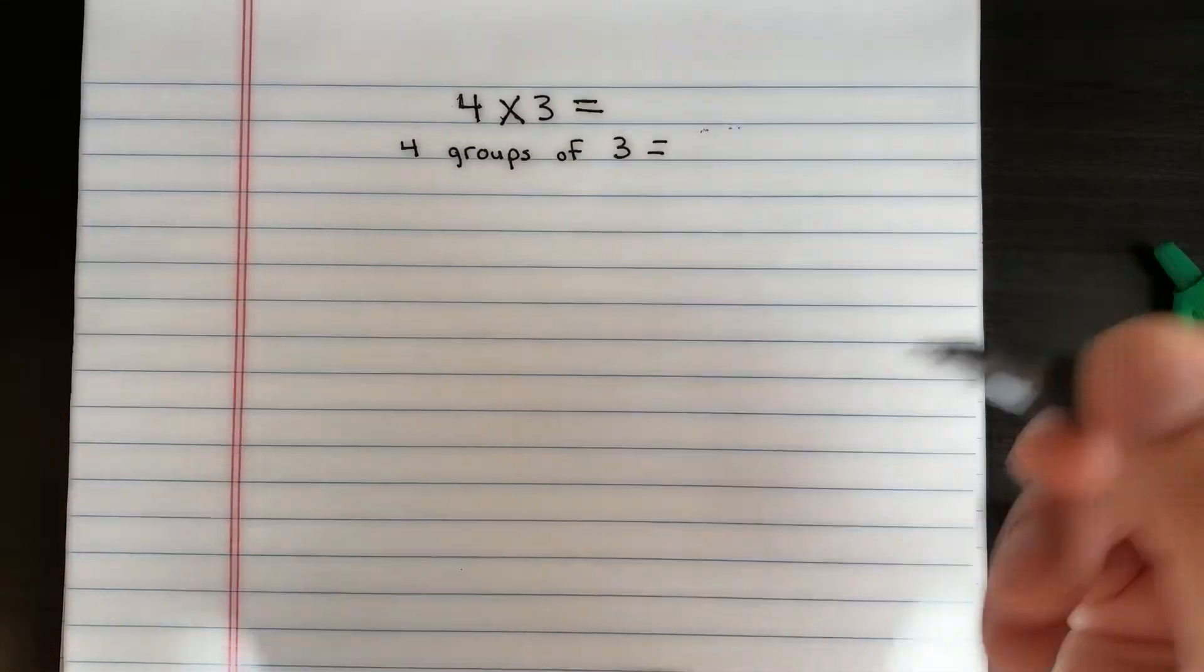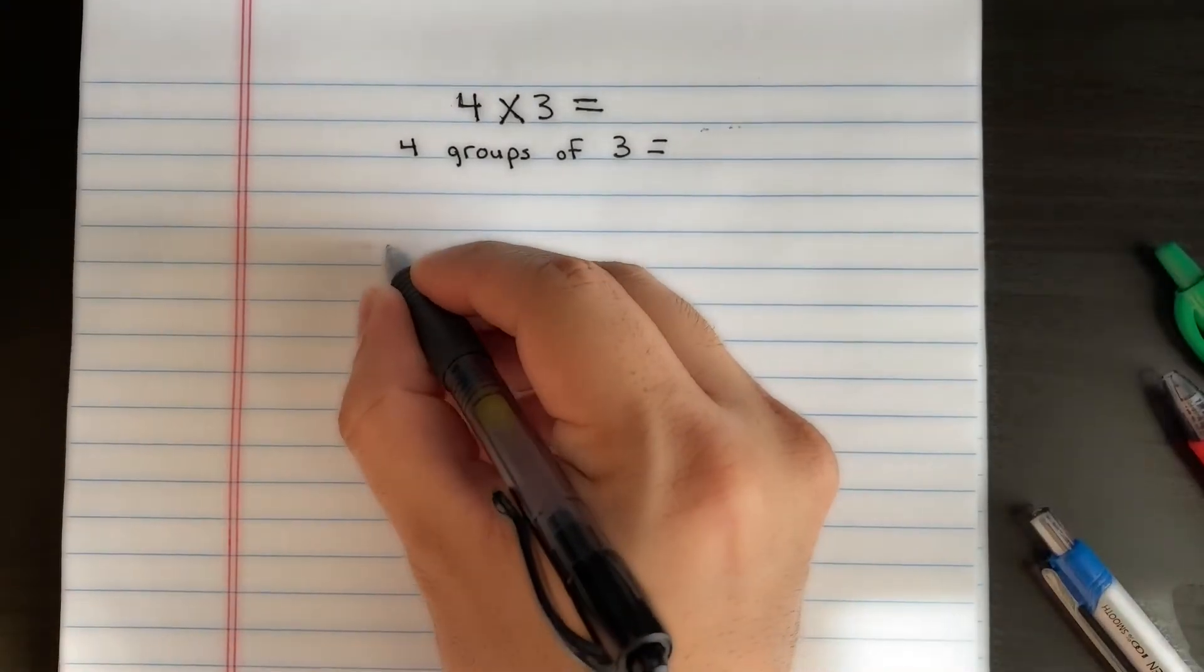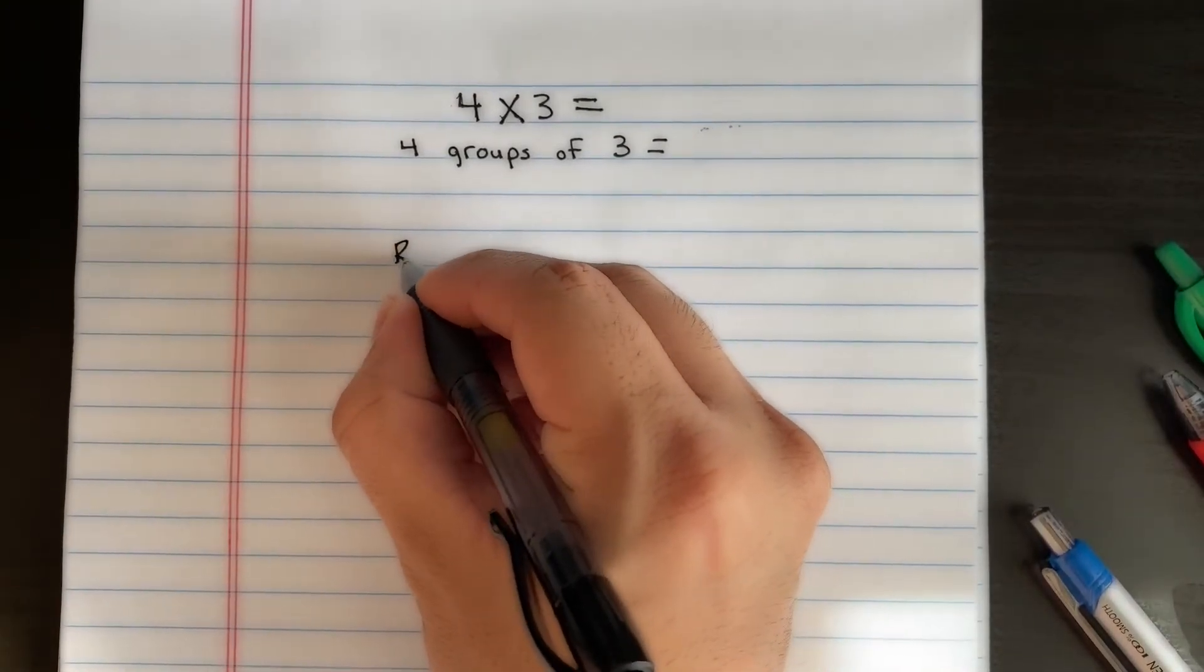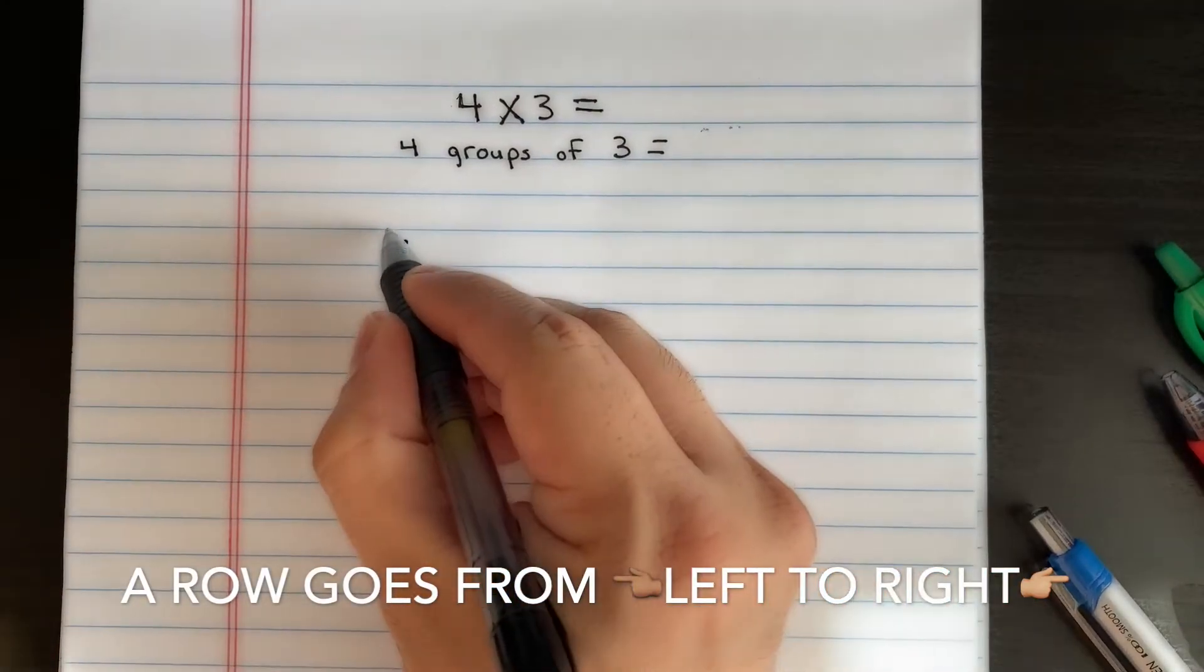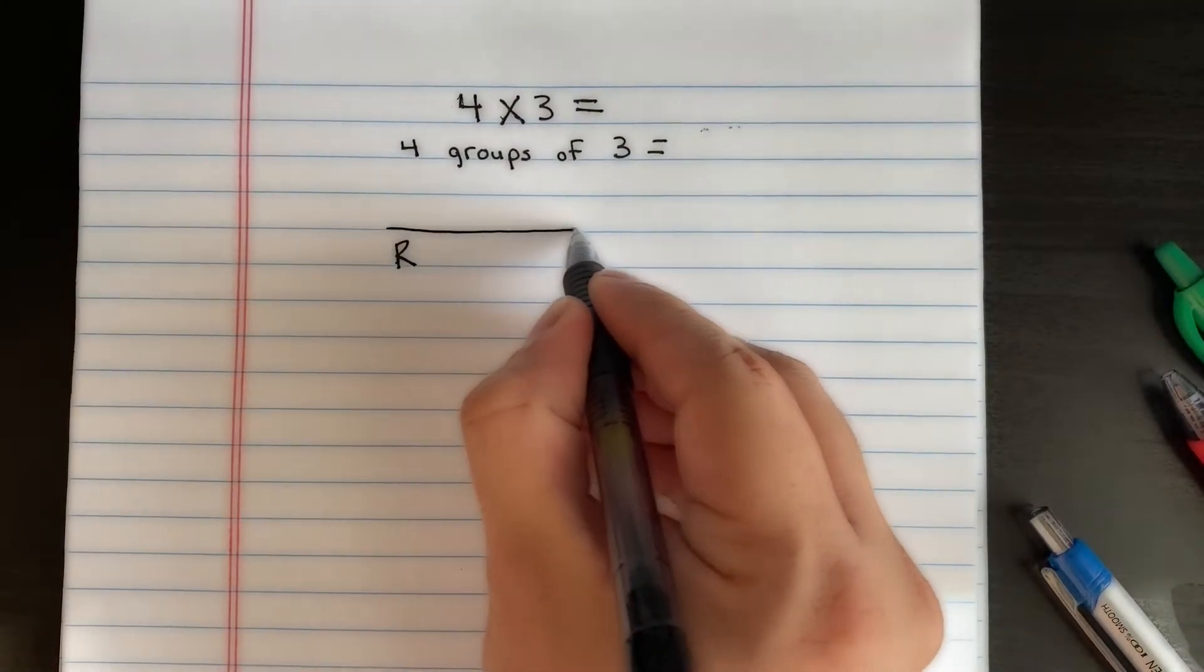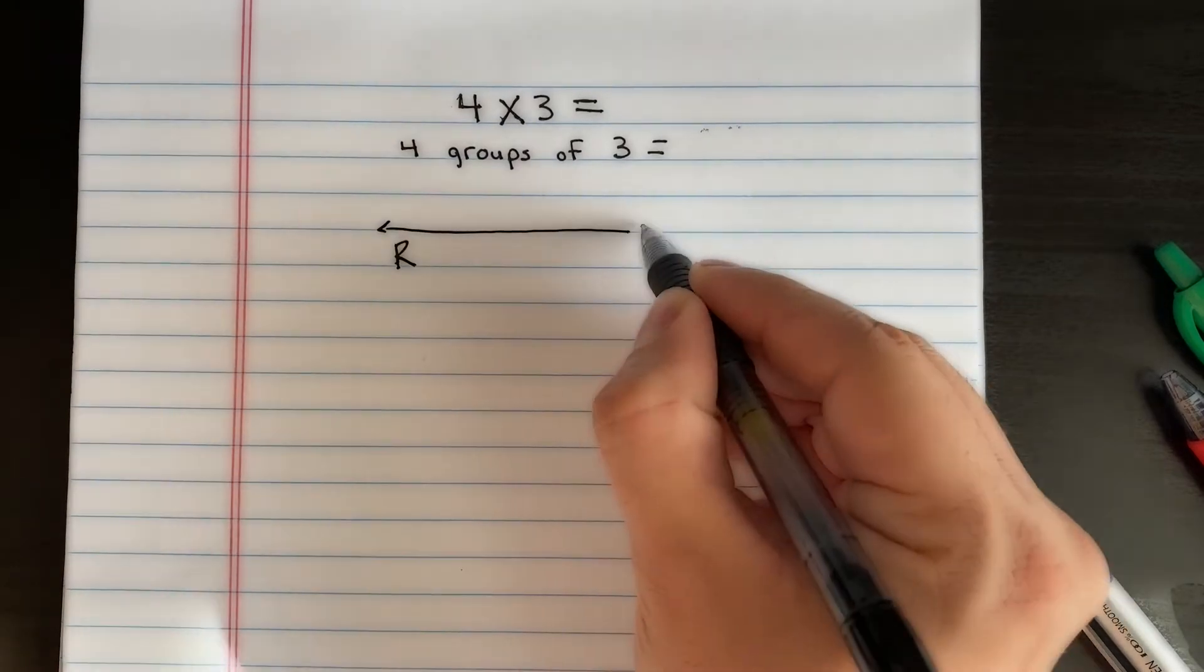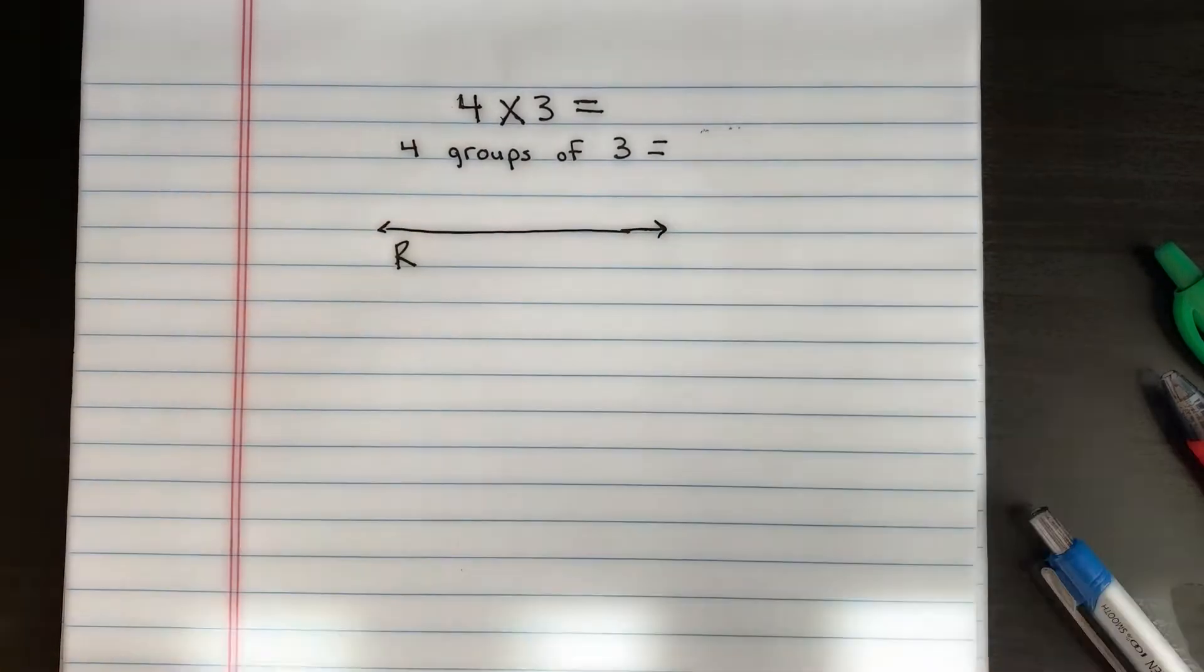So a row is just something that goes, I'm going to put an R here for row, and it's just something that goes from left to right. So a row goes from left to right, just like that.